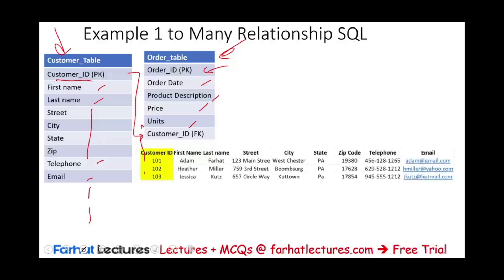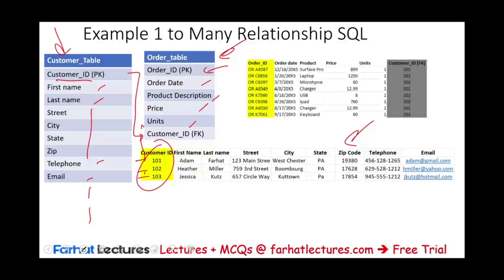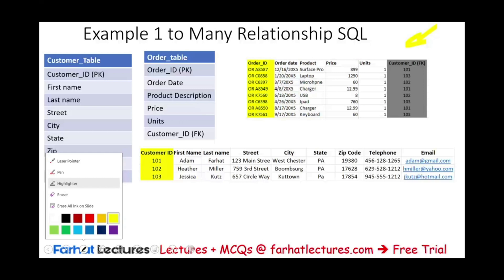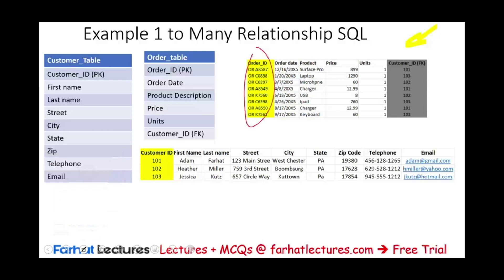Looking at more realistic data, let's assume we have three customers — Adam, Heather, and Jessica — with customer IDs 101, 102, and 103. This is the primary key along with each customer's address, name, and so on. These customers placed orders at our company. The order table has a unique order ID as its primary key, the order date, the product purchased, the price, and units. The customer ID in the order table is the foreign key — this is how the two tables are connected.